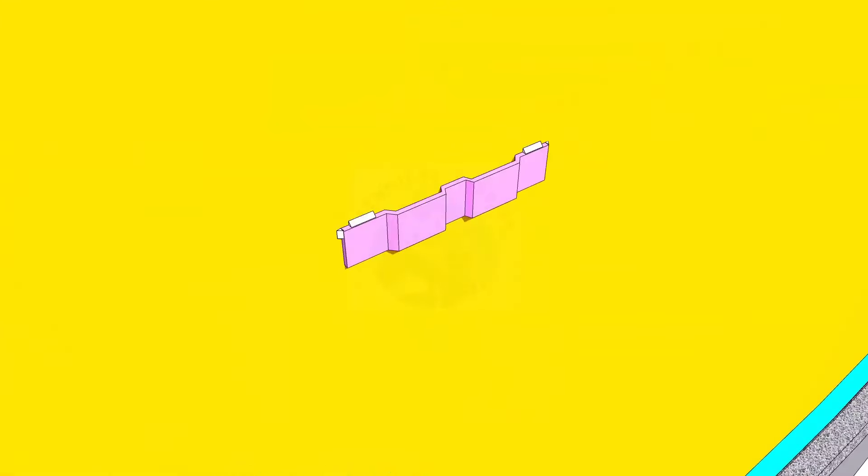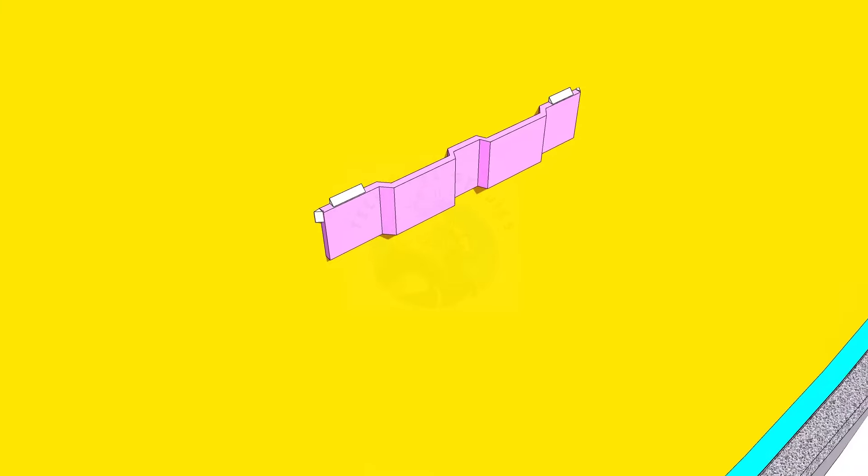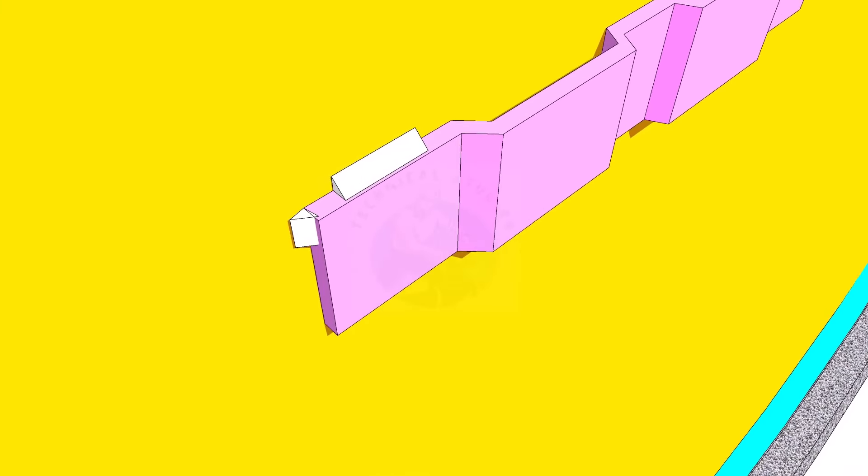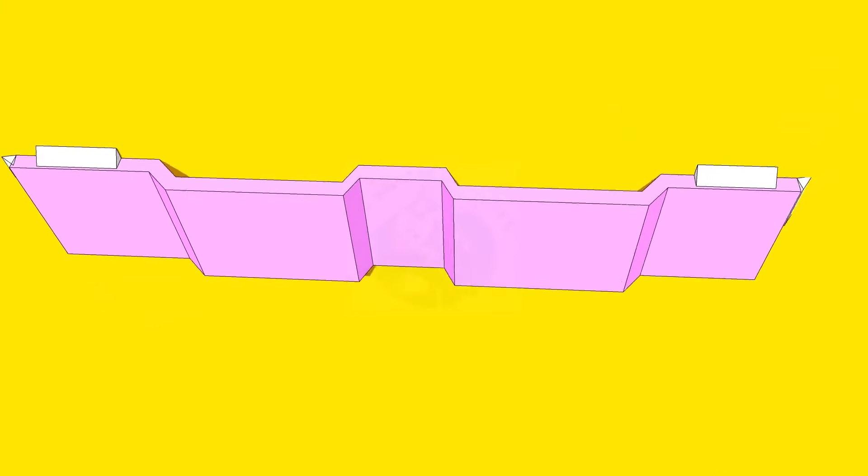Tack weld the shell clamps on the tank as per the required height. The welding shall be full on the top side of the clamp. A small tack shall be enough on the sides.